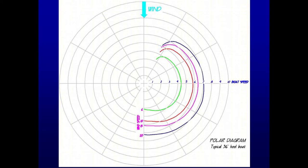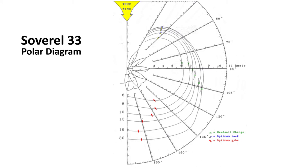Here is an actual polar diagram of a Soverell 33 sailboat. It is interesting to note the red tick marks, which show the optimum angle to sail downwind in order to maximize the boat speed in the direction of the wind. This clearly indicates that the slowest course to the downwind mark is to sail directly downwind. Jibing downwind is essential, especially at lower wind speeds.